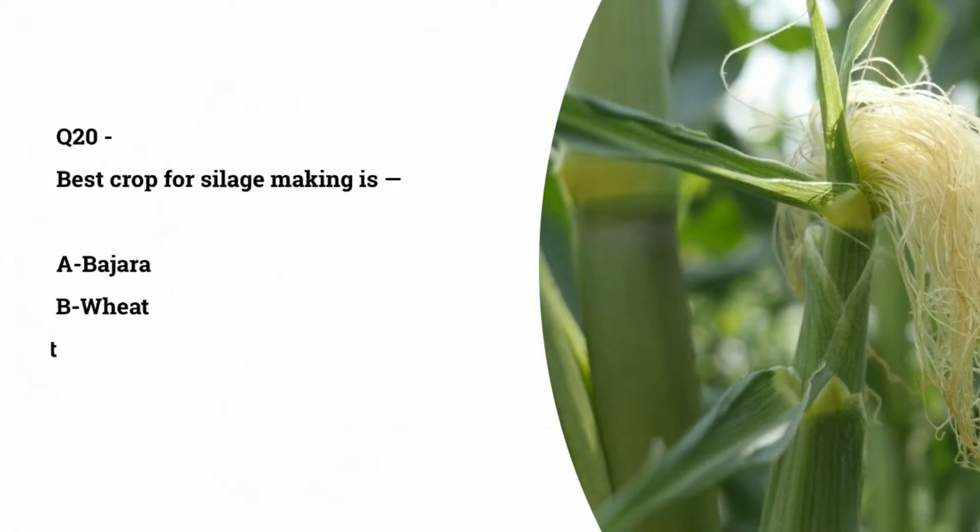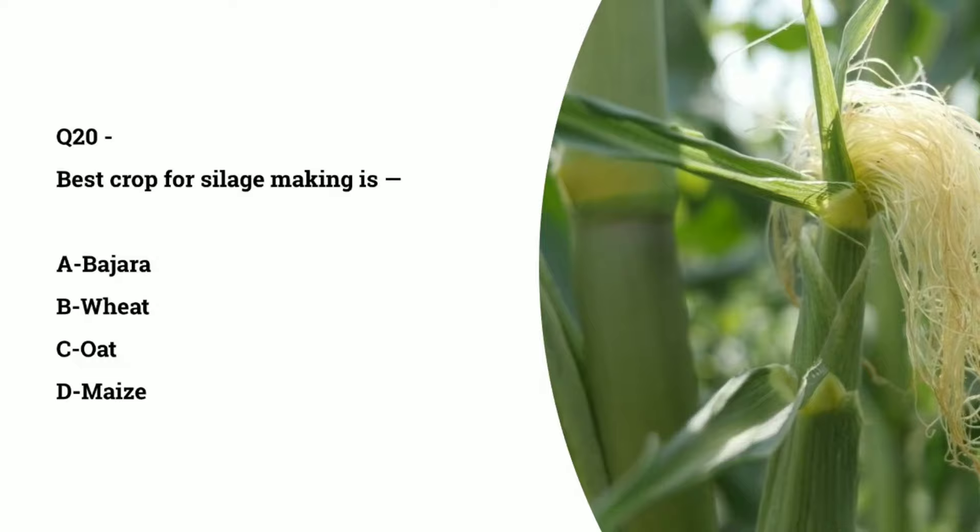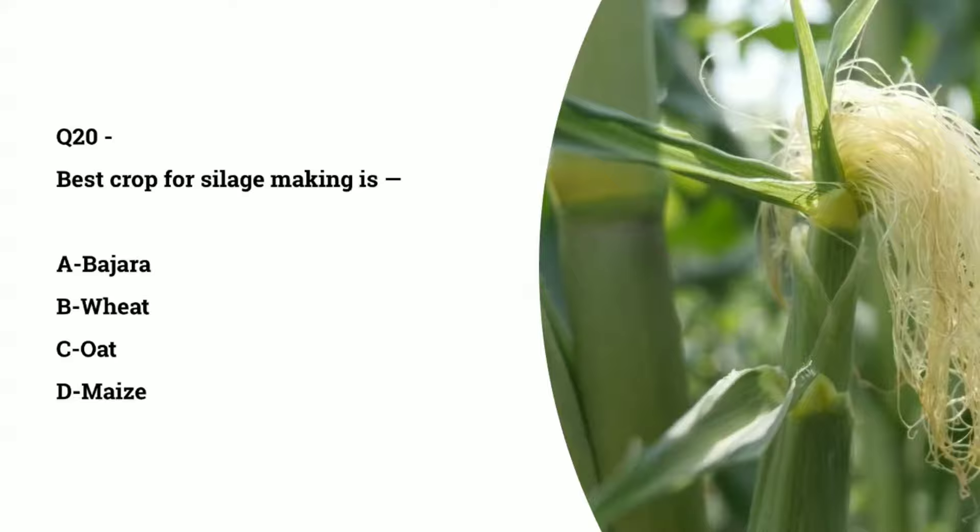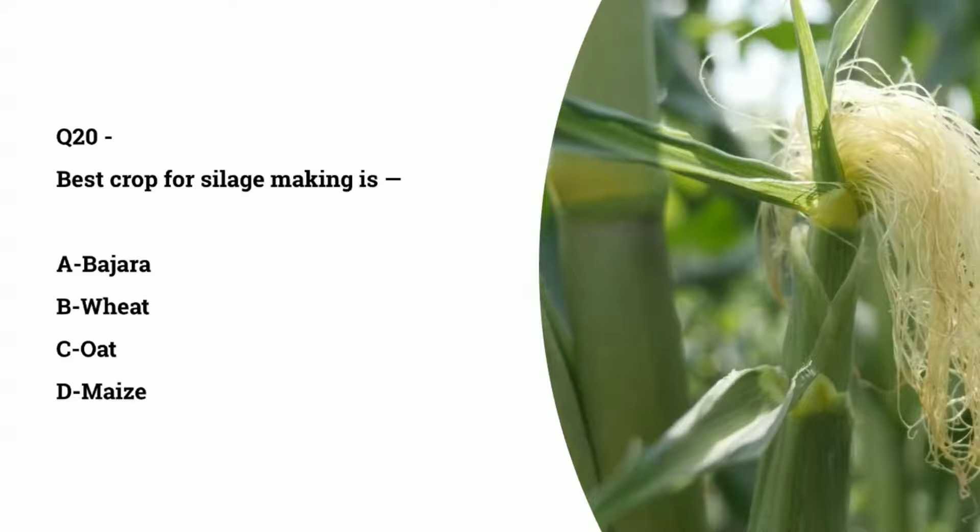Question number 20: the best crop for silage making is — options are bajra, wheat, oat, or maize. Do comment the answer to this question. If you want to join the AFO course, the link is given in the description box. Don't forget to like and subscribe. Thank you.